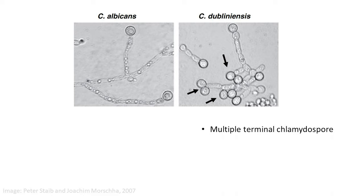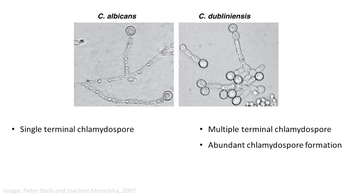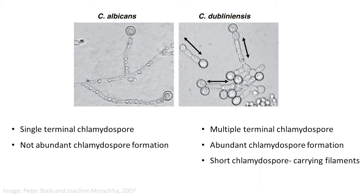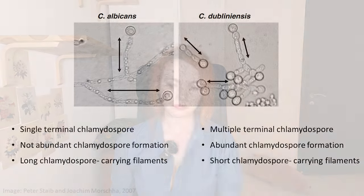Here are microscopic pictures of Candida dubliniensis and Candida albicans grown on stave agar. As we can see, Candida dubliniensis has multiple terminal chlamydospores, while Candida albicans shows single terminal chlamydospores. In general, chlamydospore formation in Candida dubliniensis is more abundant than in Candida albicans. In addition, chlamydospore-carrying filaments appear generally shorter in Candida dubliniensis than in Candida albicans.